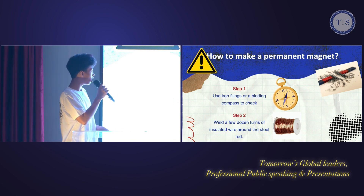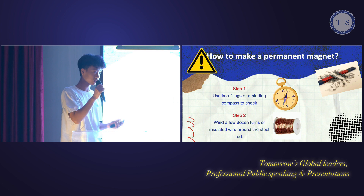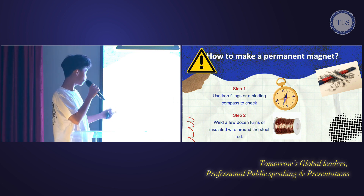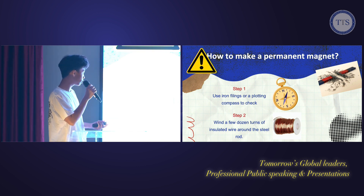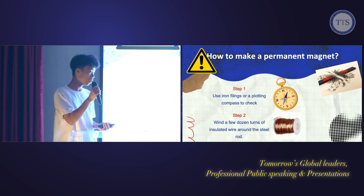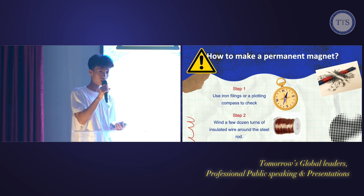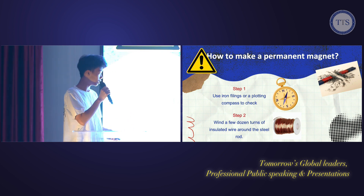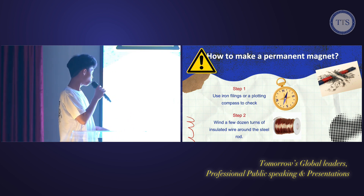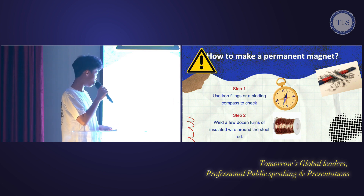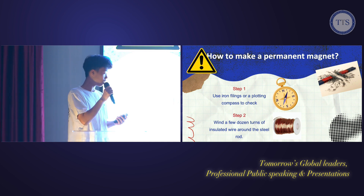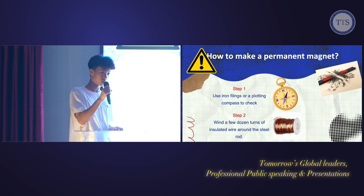So how to make a permanent magnet? First of all, we use an iron filing or a plotting compass to check that the steel rod is not magnetized. Then we wind a few dozen turns of insulated wire around the steel rod.